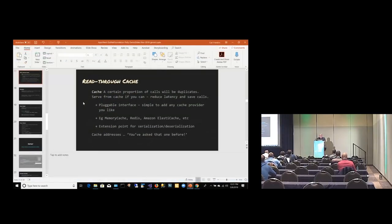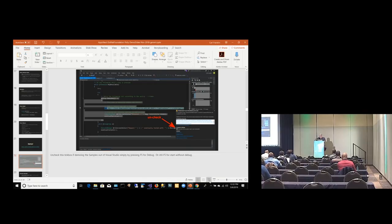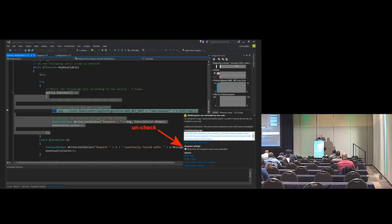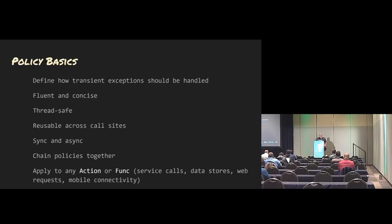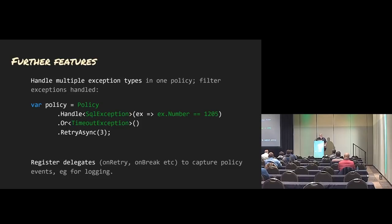Getting back to the slide deck. Just a tip: if you're running the demos in Visual Studio, you want to uncheck the tick box, otherwise it's going to stop on you. Further features: you can handle multiple exception types in one policy with a filter, which is what we did in the wait and retry policy — filtering all exceptions except for when we had an open circuit. Here's one where you can handle a SQL exception where the number is 1205 — you can be very specific in the exceptions you want to handle per policy.